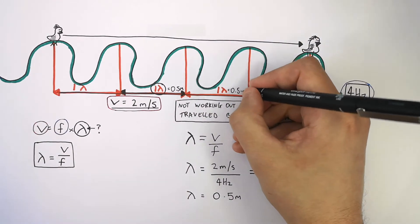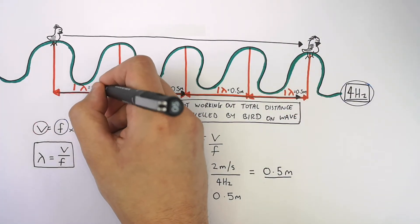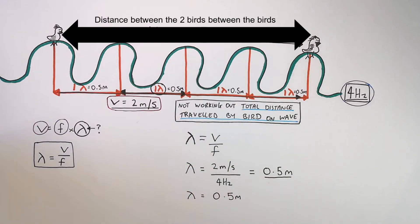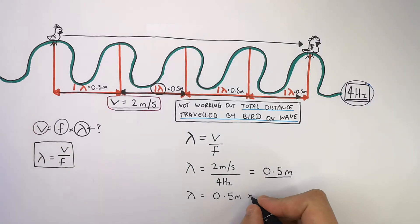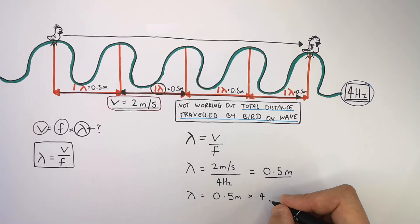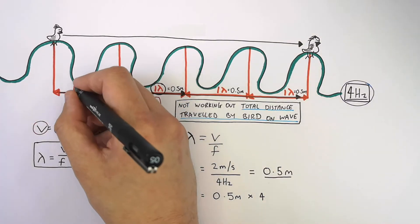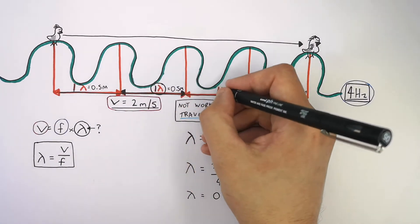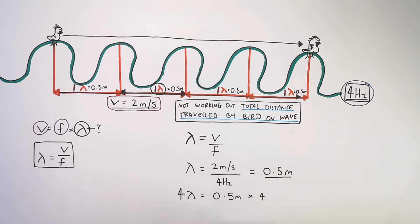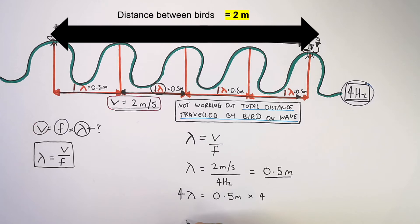Because there are four wavelengths, each of them 0.5 meters — and we're not working out how far ducks are traveling on waves — we work out the total distance the two ducks are apart. The total distance is 0.5 times four: one wavelength multiplied by the number of wavelengths between the two ducks. Because there are four wavelengths each of 0.5 meters, the total distance is two meters.